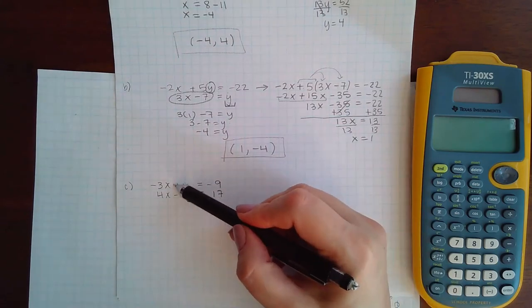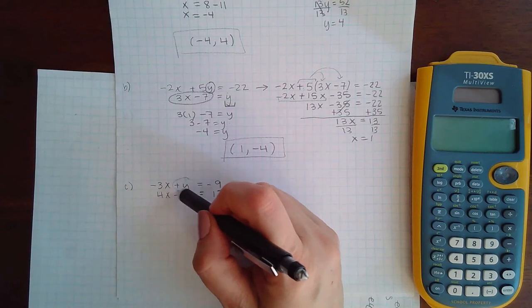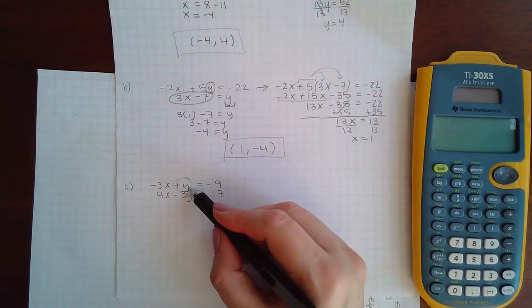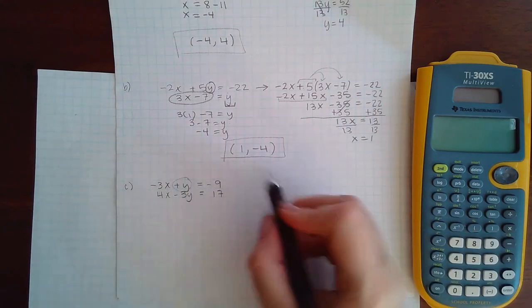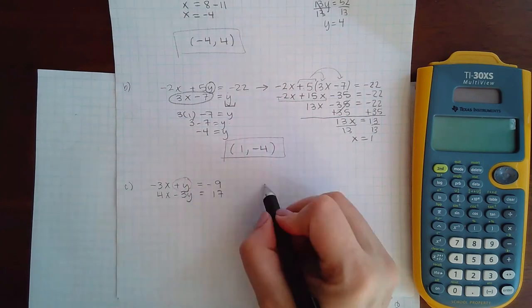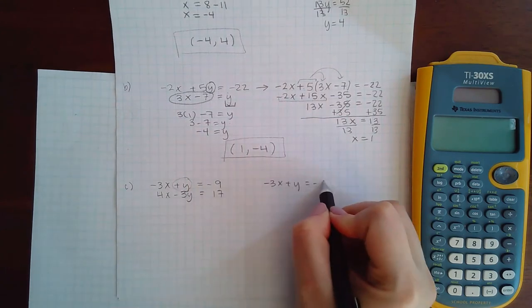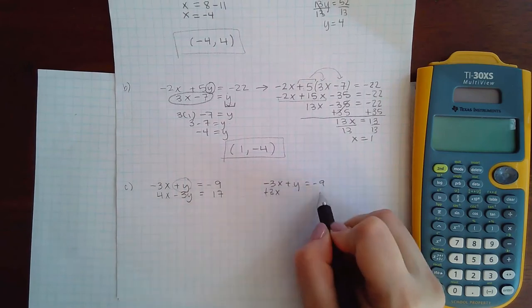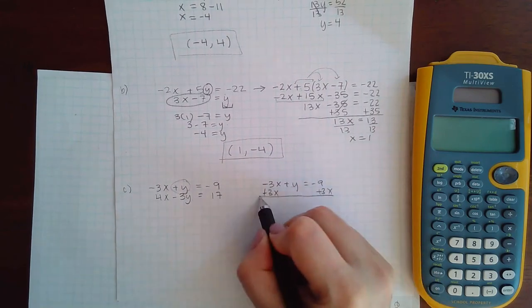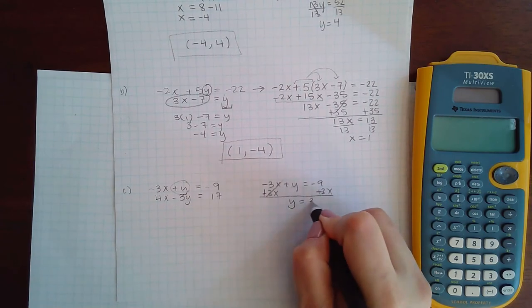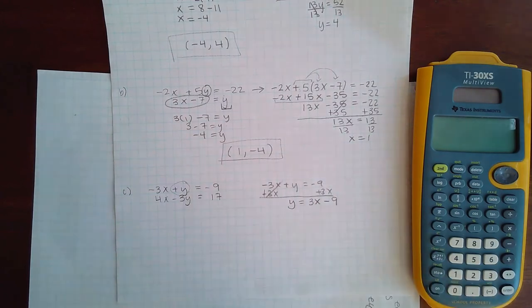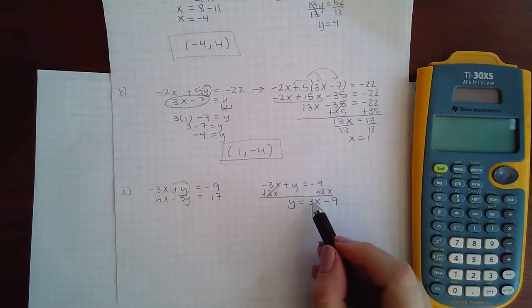But in this instance, I do have a variable that does not have a coefficient. It doesn't have a 2 or fraction or anything crazy. So I'm going to try to isolate this for y. So in order for me to do that, I would have to take that equation and add 3x to the other side. And so then I get a positive y equals positive 3x minus 9. You cannot combine these. They're not like terms. Now that I have an expression for y,